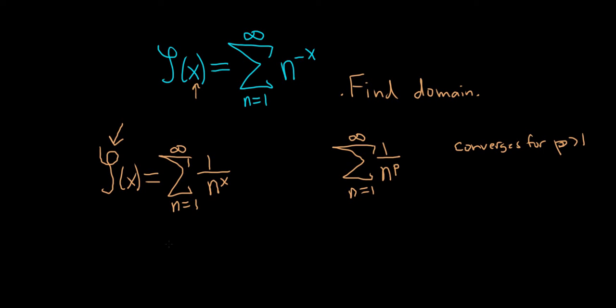So this will converge when, well, instead of p, it's x. So when x is bigger than 1. So the Riemann zeta is defined for real values of x greater than 1.